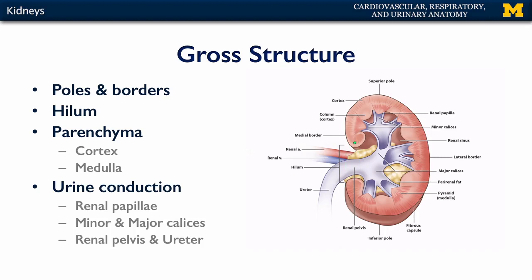The parenchyma, or the physiologically active tissues of the kidney, is divided between the cortex and the medulla. The cortex is found in the most superficial layer of the kidney, and it also invaginates amongst the medulla as columns — so everything outlined in green would be the cortex. The medulla sits nestled amongst the cortex and is often referred to as the renal pyramids, though when you account for its three-dimensionality, it's actually shaped like a cone rather than a pyramid.